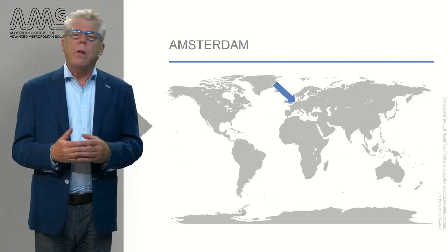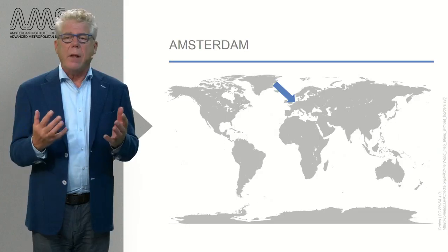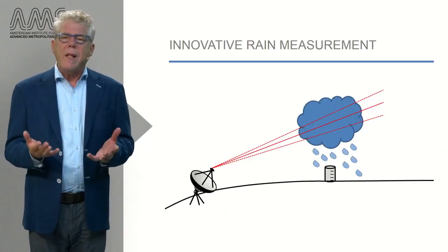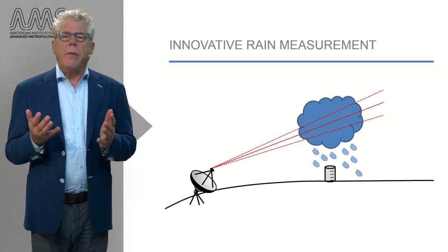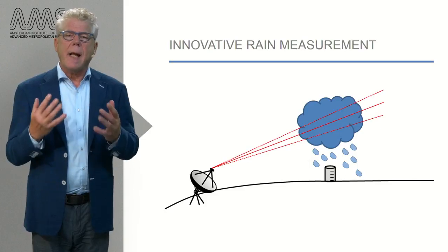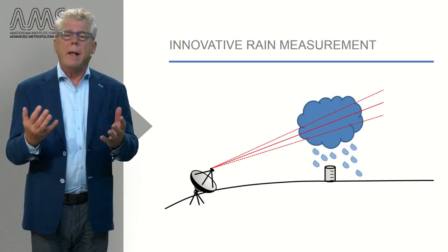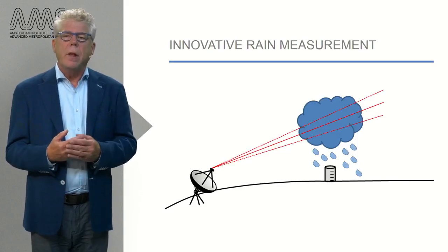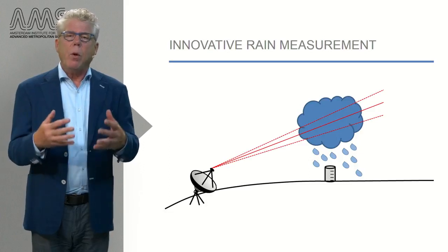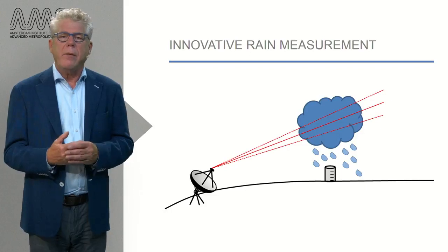Then we will focus on two aspects of urban water management where co-creation has an important contribution. First, we dive into the world of innovative measurement methods. We will see how citizens help sensing their city in various ways. We will hear that they have contributed to urban rainfall monitoring, mapping water nuisance, and assessing the quality of surface water in the city of Amsterdam.